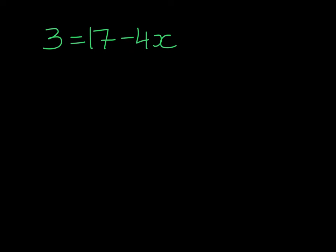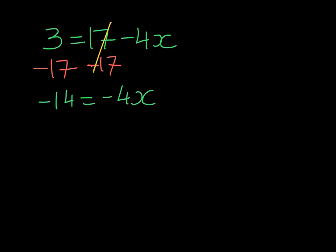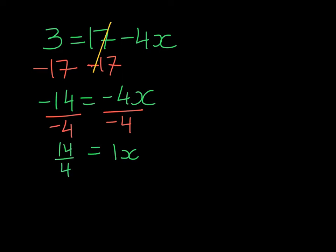So first we are going to subtract 17 from both sides. On the right-hand side we are left with negative 4x. And on the left-hand side, 3 minus 17 gives us negative 14. We can see that x is being multiplied by negative 4, so we will divide by negative 4 on both sides. On the right-hand side we get 1 with x. And on the left-hand side, negative divided by negative will give me positive, so we get 14 fourths.